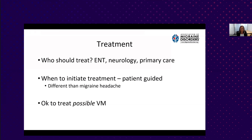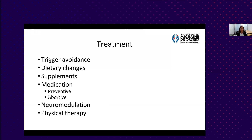Treatment involves much of the same approach as migraine headaches. Trigger avoidance is very important—usually it's a combination of triggers that give rise to these episodes, not just one trigger all the time. For example, a patient might eat chocolate without an episode, but when combined with a weather change or stress, they can have one. Treatment modalities include dietary changes, supplements, medications, neuromodulation, and physical therapy.